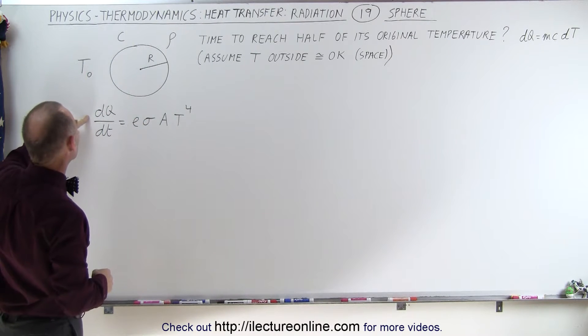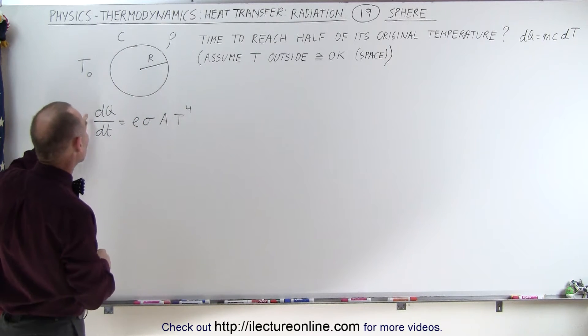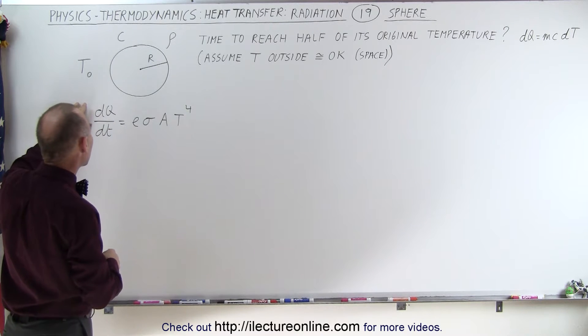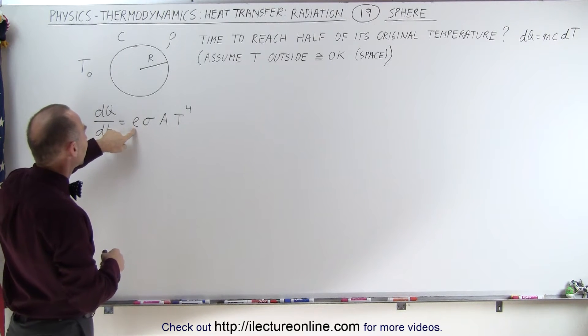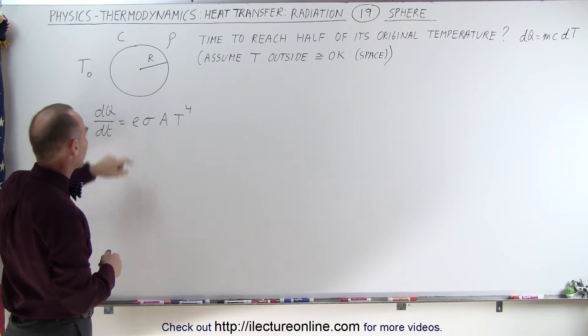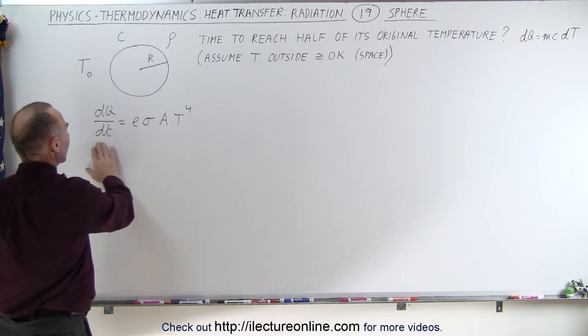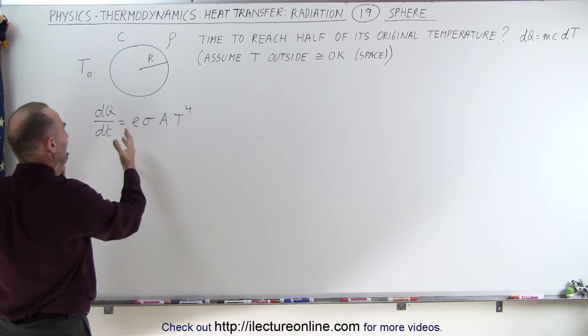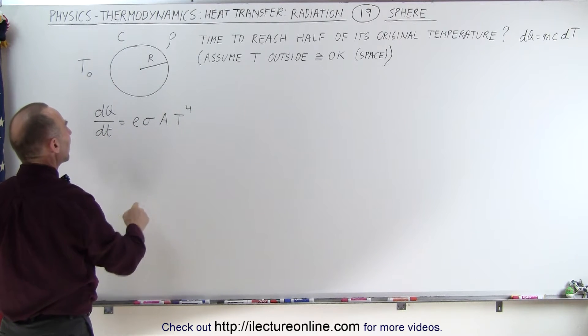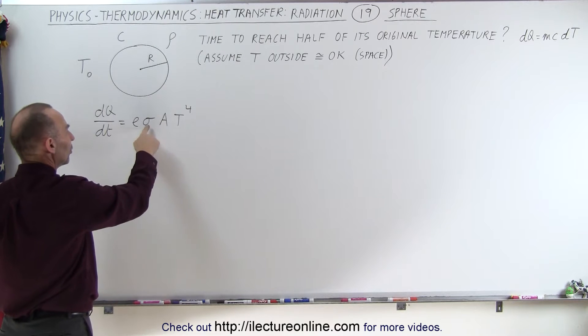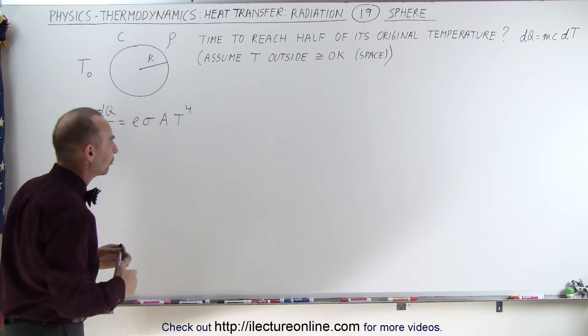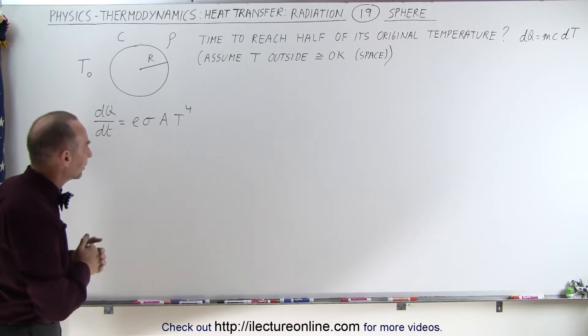And we're going to need the Stefan-Boltzmann equation where the heat that is radiated out, dQ/dt, is equal to the emissivity constant, the Boltzmann constant, the surface area, and temperature to the fourth power, all multiplied together.